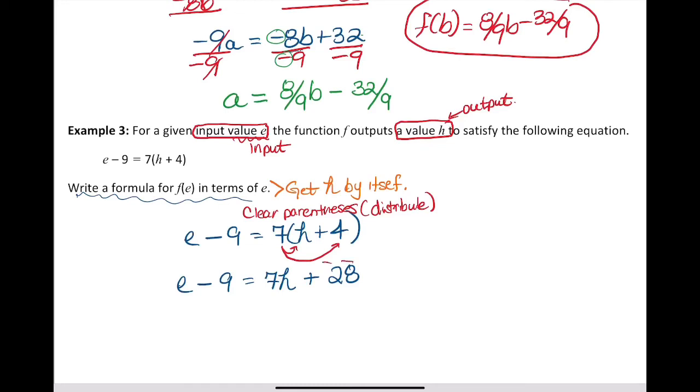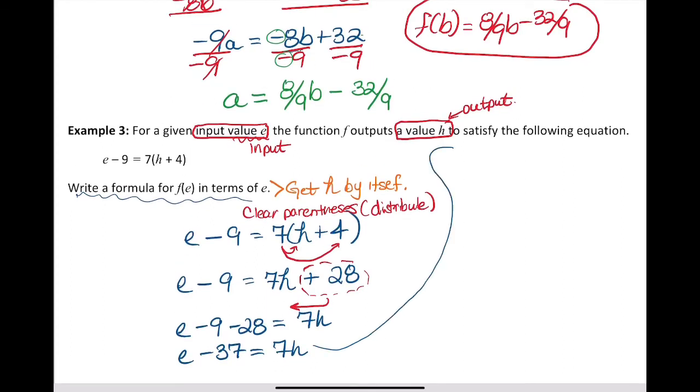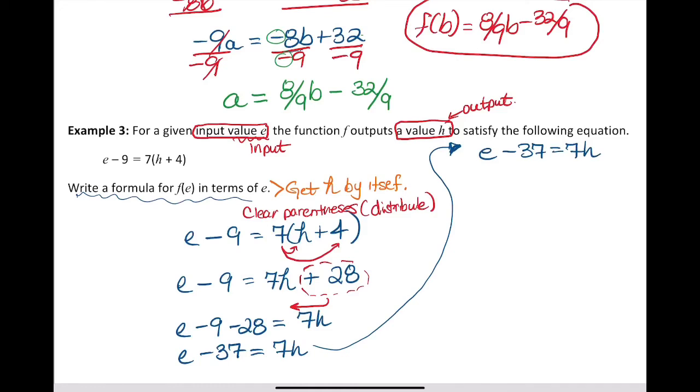Let's move that constant 28 over to the left side. That keeps the h term positive. We've got e - 9 - 28 = 7h. Negative 9 and negative 28 makes negative 37 = 7h. We're not quite there yet. We want to get it into simplest functional form. We divide everything by 7. These are the only things that cancel out.